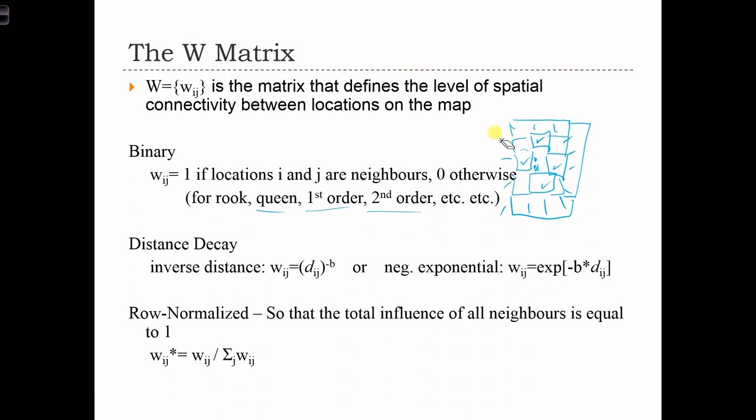So we can have first order and second order Rook and Queen contiguity for binary weight matrices, for binary W matrices.